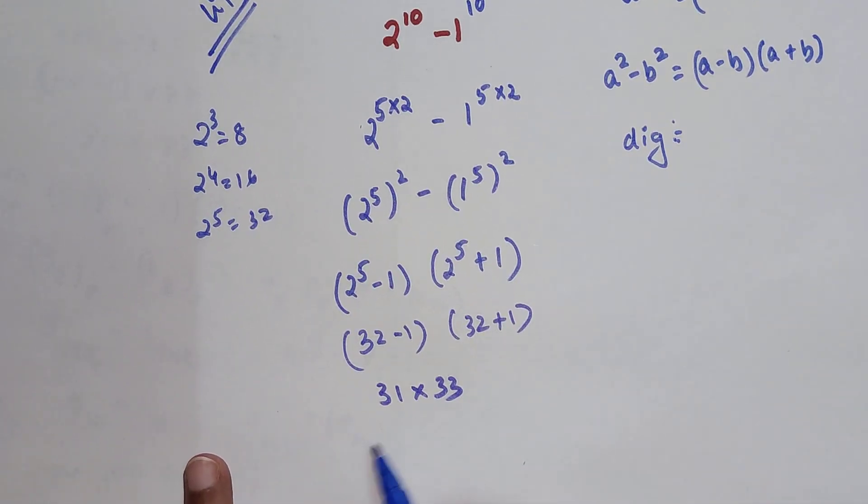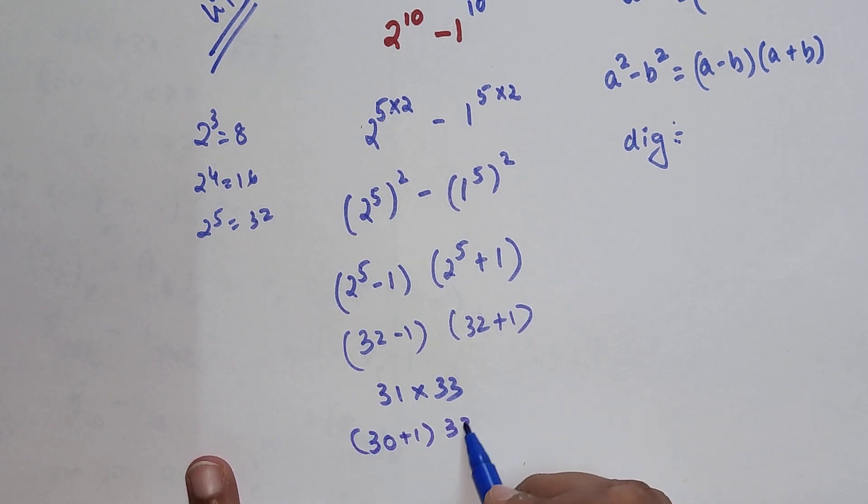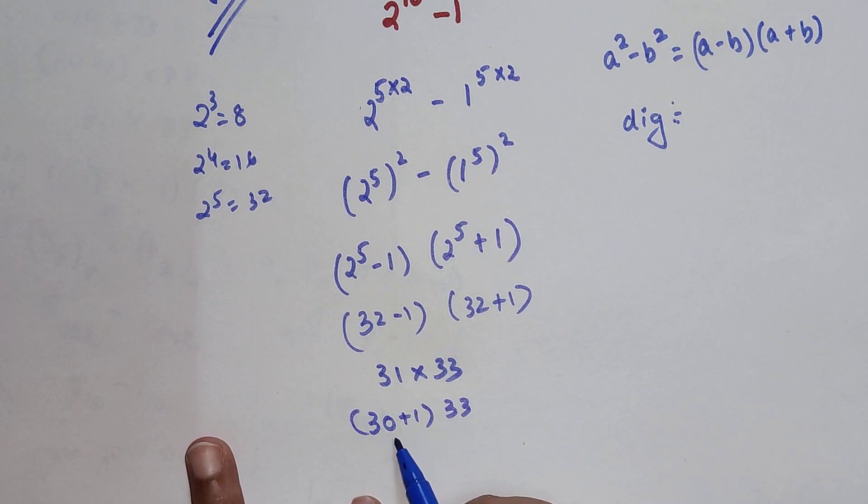Now please understand you can do this directly, but I am going to show you one more trick. You can break this 31 as 30 plus 1 times 33, so 30 when multiplied by 33 will get you 990 plus 1 into 33, that gets you 33.